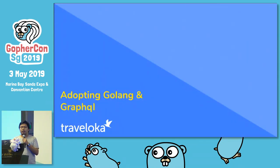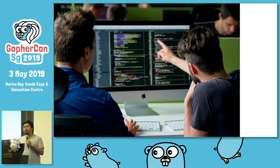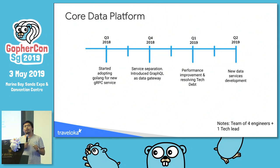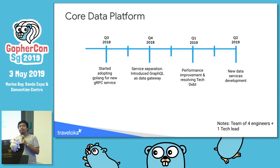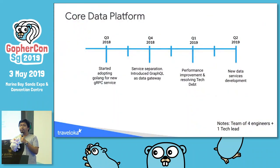This is our journey in adopting Golang and GraphQL. We learned Golang by doing pair programming, which helped us learn faster since we didn't have much time. We started using Golang in Q3 2018, beginning with one POC — a gRPC server using Golang. In the next quarter, we separated our monolith into smaller services and used GraphQL as a data gateway. This year we're doing improvements and still developing new features. Our engineering team has four people plus one tech lead.